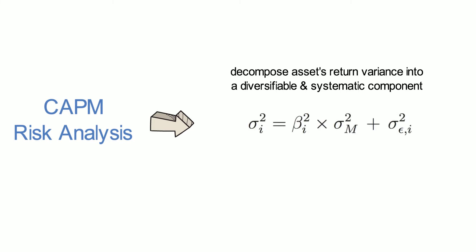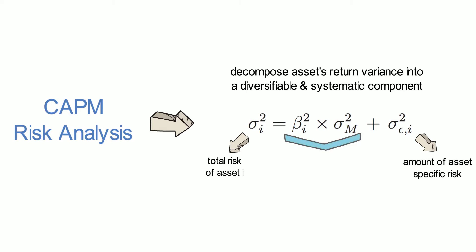Where the left-hand side captures total risk of asset i, sigma squared epsilon i captures the amount of asset-specific risk, and beta i squared times sigma squared m is asset i's amount of systematic risk.